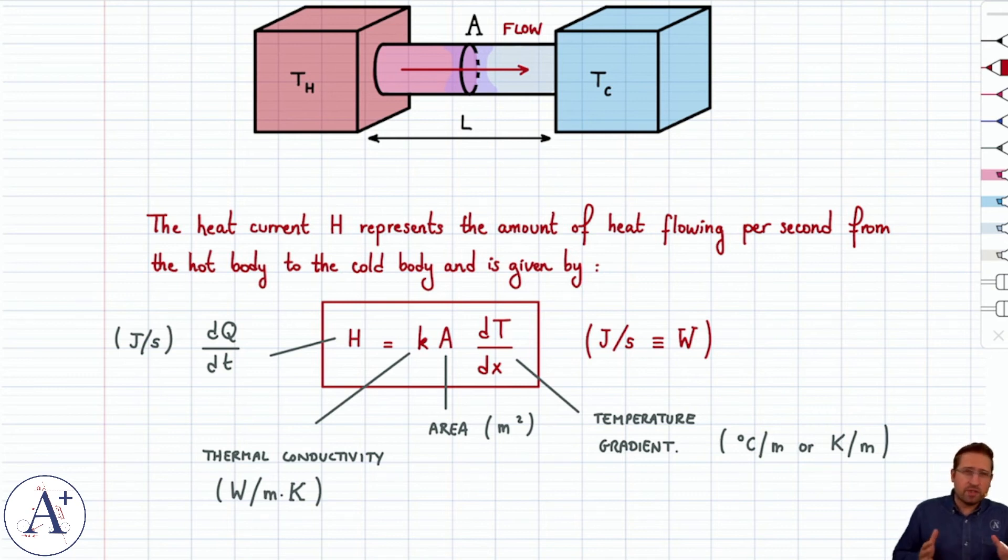But most of the time, we will have steady state flow. And this will be the case when TH is maintained constant and TC is maintained constant. And therefore, the gradient across the length L of the connecting rod is just constant. It's delta T divided by L.